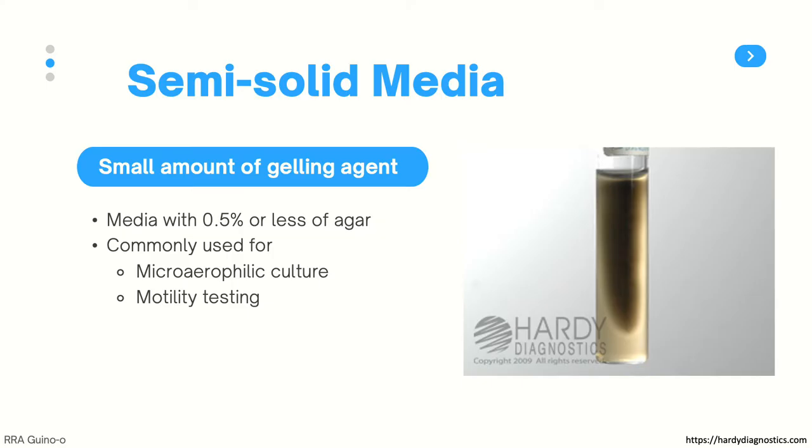In this media, bacteria can freely move. So in the example on the right, you can see a sulfide indole motility medium. The black discoloration you see indicates the presence of sulfide-producing bacteria, and you can see that they are spreading from the inoculation point.